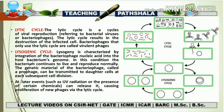Now let's come to the lysogenic cycle. Lysogeny is characterized by the integration of the bacteriophage nucleic acid into the host bacterium's genome. In this condition, the bacterium continues to live and reproduce normally. The genetic material of the bacteriophage is called a prophage and can be transmitted to daughter cells at each subsequent cell division. Unlike the lytic cycle, in the lysogenic cycle the phage DNA integrates into the bacterial DNA itself and copies are passed to daughter cells.